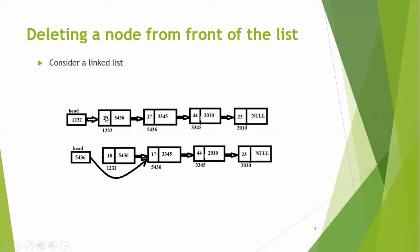To delete the first node, I have simply changed the address of the header to the address of the second node. This address is available in the first node's link part. Just access the first node link part and copy that address to the header. When you change the address of the header to the address of the second node, this node still exists in the linked list but the access to it is broken. To actually delete the node, you have to free the memory location allocated for it by calling the free function in C language, passing the address of that node as the parameter. Once you call the free function, the memory allocated for that node will be taken back by the computer, and thus you perform the deletion operation.